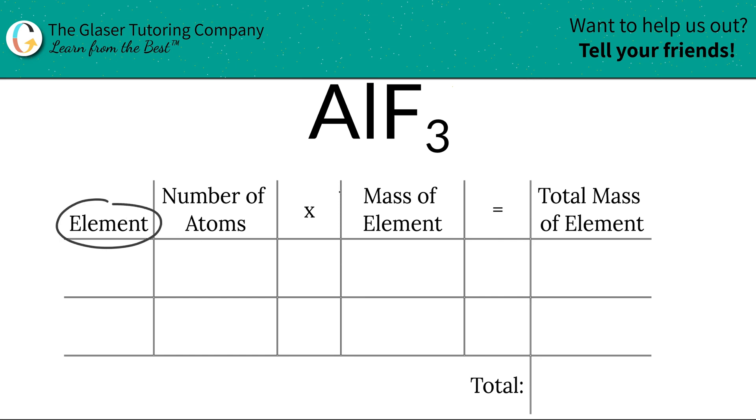The first column says to fill out the element in the compound. So we have aluminum here, so I'm going to write aluminum. And we have fluorine, so we write in fluorine. Next thing is to identify the number of atoms, and that's where the subscripts come into play.